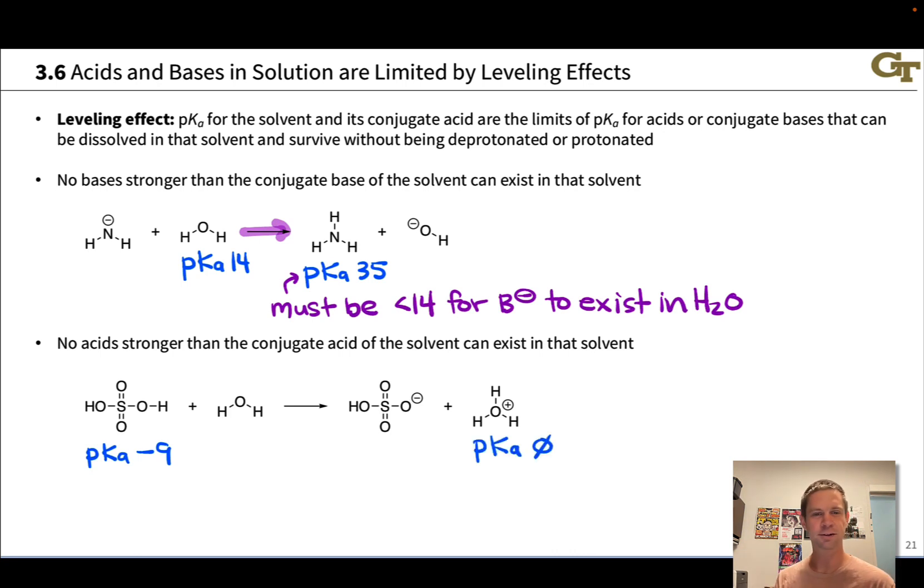The pKa of hydronium is 0. So this is an insanely favorable acid-base equilibrium, completely favored in the forward direction. And so what we'll have when we dissolve sulfuric acid in water is not sulfuric acid really at all. It's hydronium bisulfate, we'd say really. And the true acid in a solution of sulfuric acid in water is hydronium ion, not H2SO4.